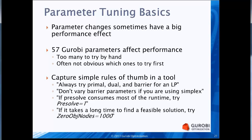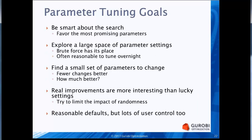Those are just a few examples of the rules of thumb captured in the tuning tool. In terms of our goals in designing it: the first goal is to be smart when searching for a set of parameters. We have rules of thumb and we try the parameters that we think are likely to help on a particular model.